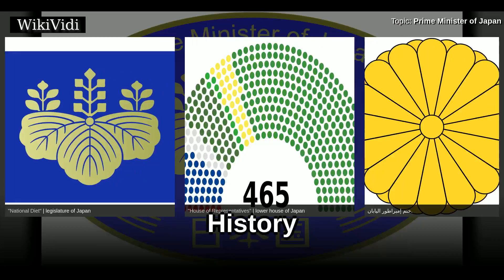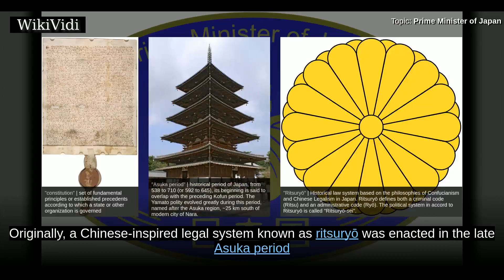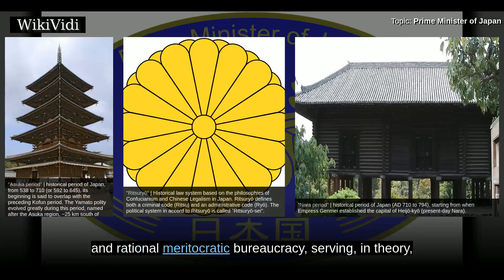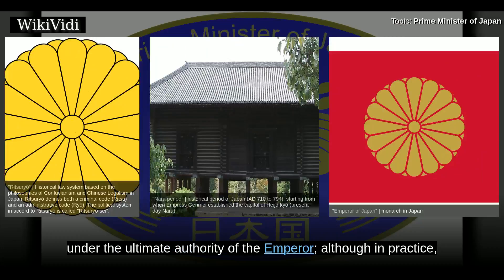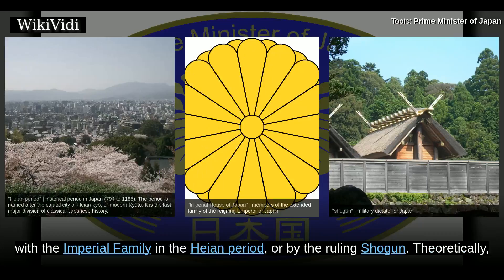History. Prior to the adoption of the Meiji constitution, Japan had in practice no written constitution. Originally, a Chinese-inspired legal system known as Ritsu-Yo was enacted in the later Suka period and early Nara period. It described a government based on an elaborate and rational meritocratic bureaucracy serving in theory under the ultimate authority of the emperor, although in practice real power was often held elsewhere, such as in the hands of the Fujiwara clan who intermarried with the imperial family in the Heian period, by the ruling Shogun.